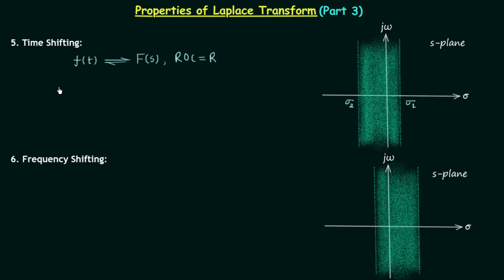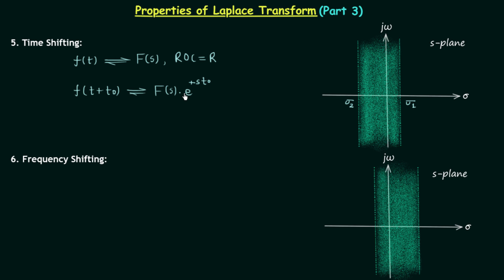We have two options: left shifting or right shifting. Performing left shifting gives a new time domain signal f(t + t₀), shifting left by t₀. The effect on the Laplace transform is that F(s) becomes F(s) multiplied by e^(+st₀), where t₀ is the amount of shifting. The region of convergence does not change — it remains the same R.